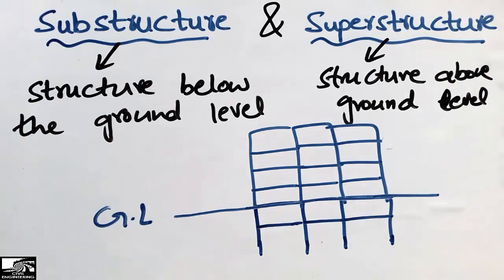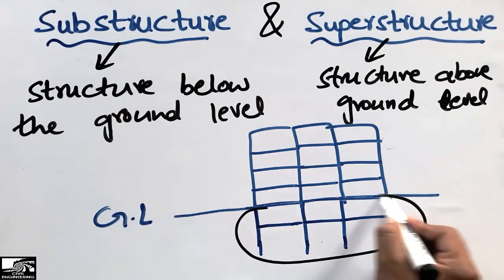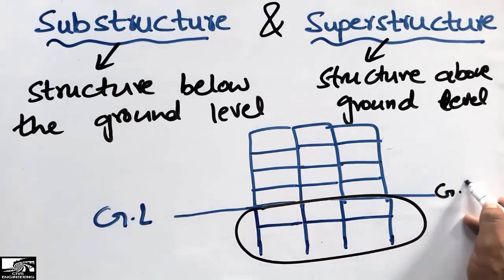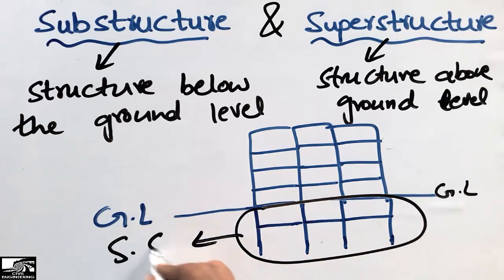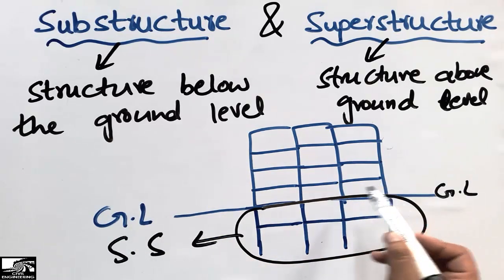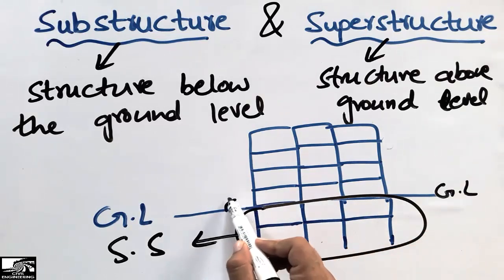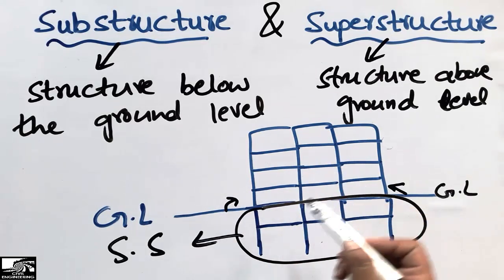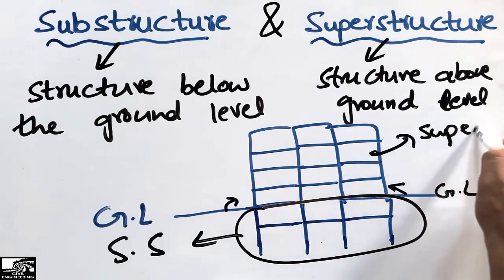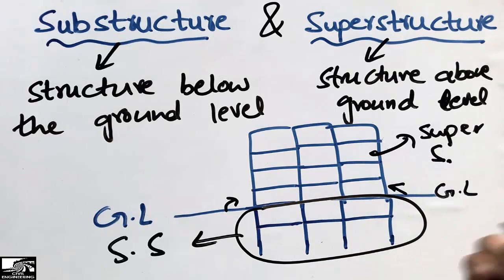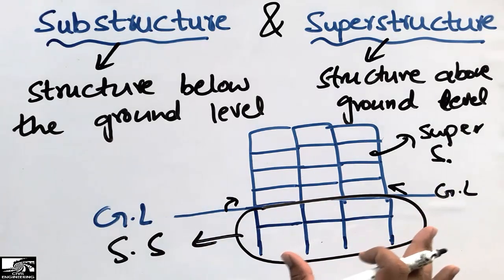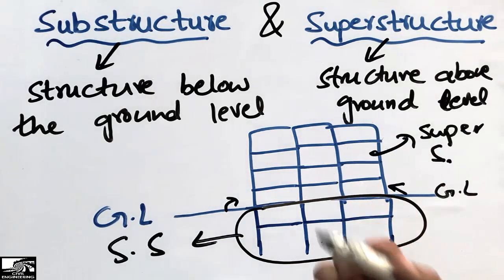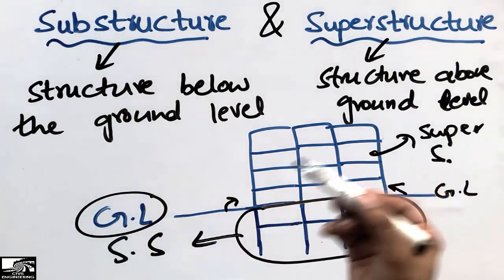Now we can define: the substructure is the structure constructed below the ground level, while the structure constructed above the ground level is called the superstructure. They may have the same beam, column, or slab dimensions, but the main difference is that substructure is always below ground level and superstructure is always above it.